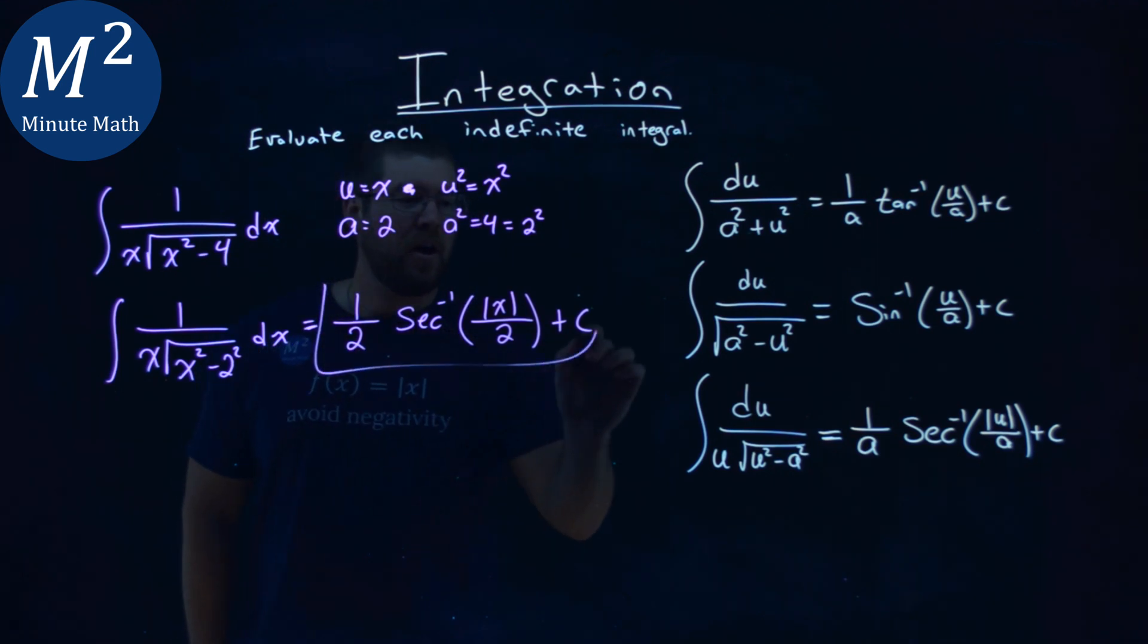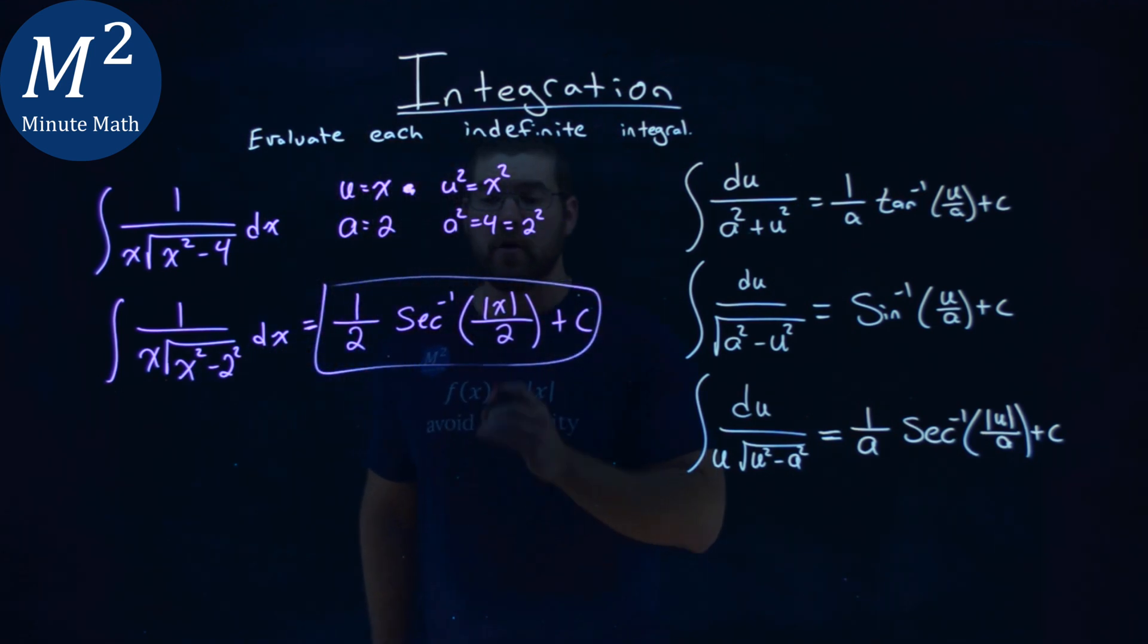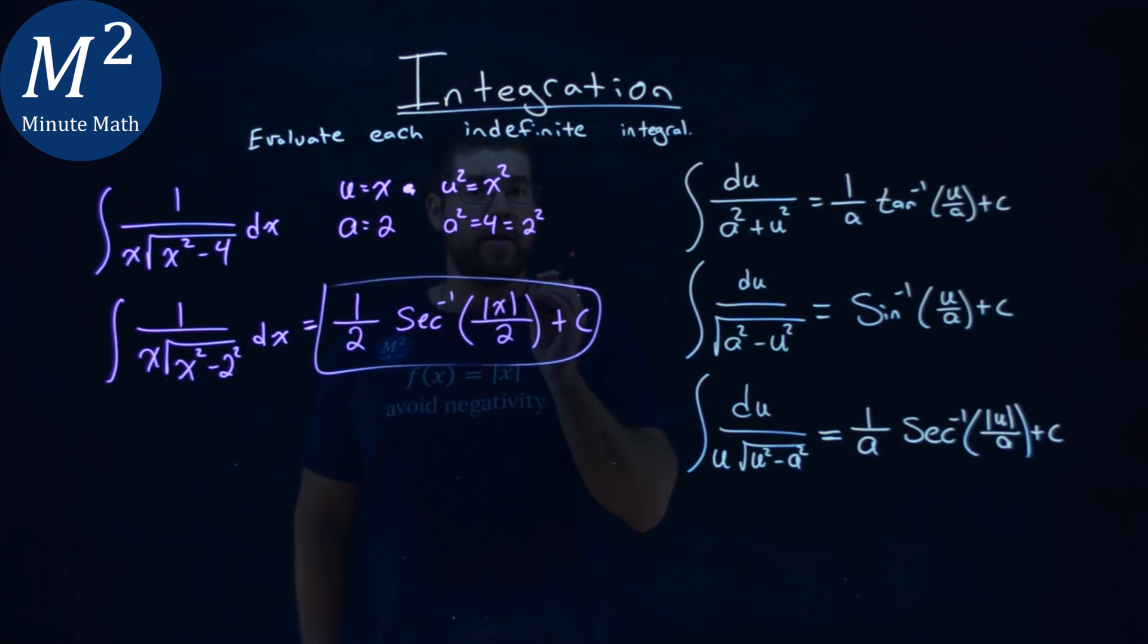And that's it. Our final answer here is 1 half arc secant of absolute value of x divided by 2 plus c.